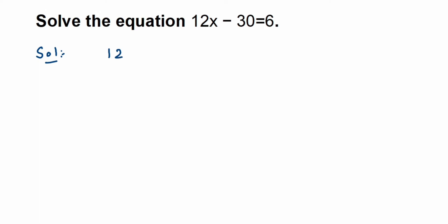With the transpose method, you can transpose a number from one side of the equation to the other. I'm going to bring all constants to one side. Here, 6 is already present, so I'll transpose minus 30 to the right side, keeping 12x on the left. So 12x equals 6. Whenever you transpose a negative number, it becomes positive — minus becomes plus.